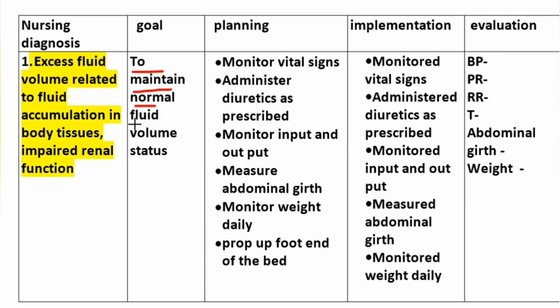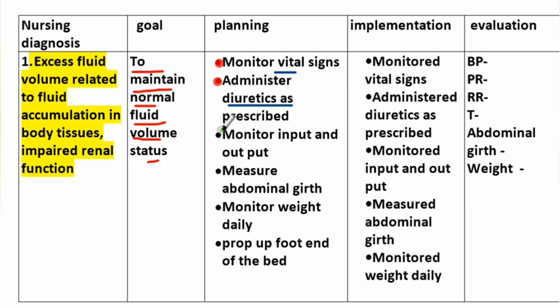Nursing diagnosis number 1: Excess fluid volume related to fluid accumulation in body tissues and impaired renal function. Goal: to maintain normal fluid volume status. Planning includes: monitor vital signs, administer diuretics as prescribed, monitor input and output, and measure abdominal girth.